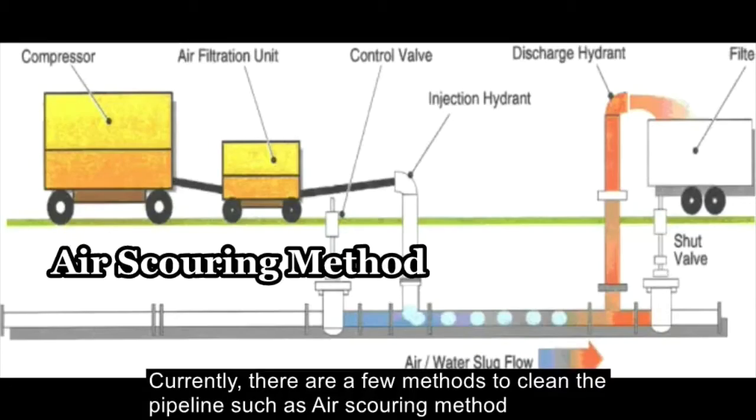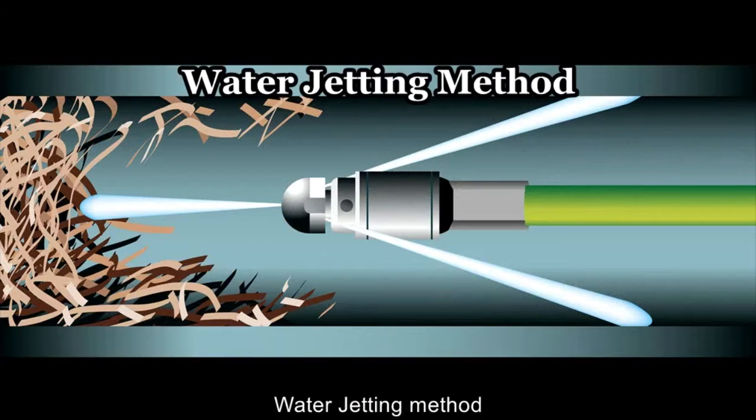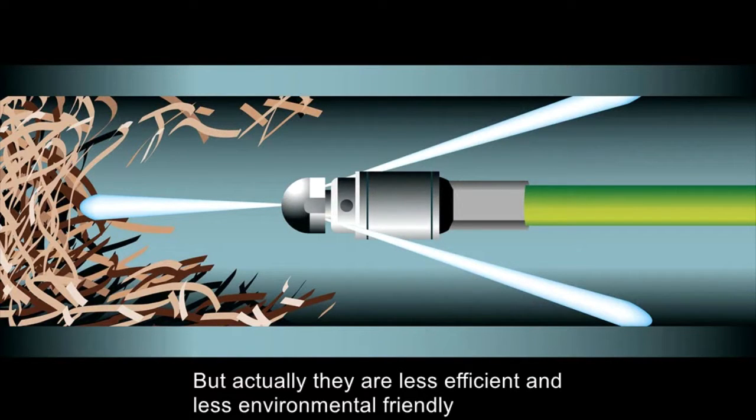Currently, there are a few methods to clean up the pipeline such as the air scouring method, picking or swabbing, and water jetting method. But actually, they are less efficient and less environmentally friendly.